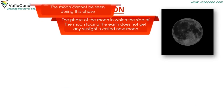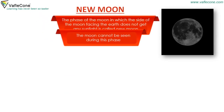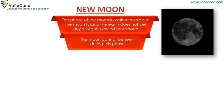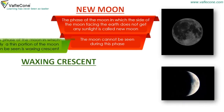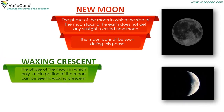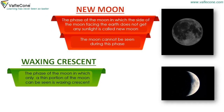The moon cannot be seen during the new moon phase. Waxing Crescent: The phase of the moon in which only a thin portion of the moon can be seen is called waxing crescent.